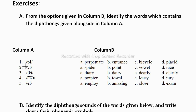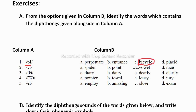The first diphthong has a sound like /aɪ/, as in 'light', 'die', and 'my'. So the /aɪ/ sound — which word contains it? The options are perpetuate, entrance, bicycle, and placid. In 'bicycle' the /aɪ/ sound is coming, so bicycle is the answer.